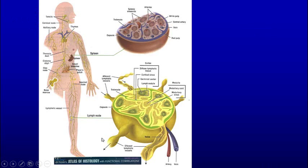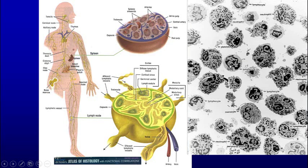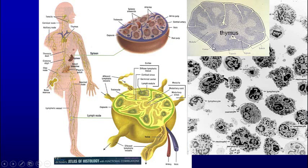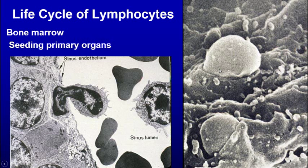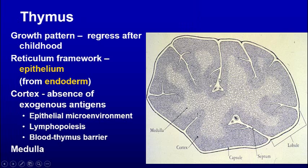We've got lymph node, lymph nodules, and the spleen. Throughout the body there are lymphatics. Here's the spleen, there's the thymus, and lymph nodes throughout the body. In the lymph node you can see afferent and efferent lymphatic vessels. The main player is the lymphocyte, and we can see an electron microscopic view of lymphocytes. Cells are squeezing out of the bone marrow — these are endothelial cells of a blood sinus, with lymphocytes squeezing through, getting out of the bone marrow into the blood.